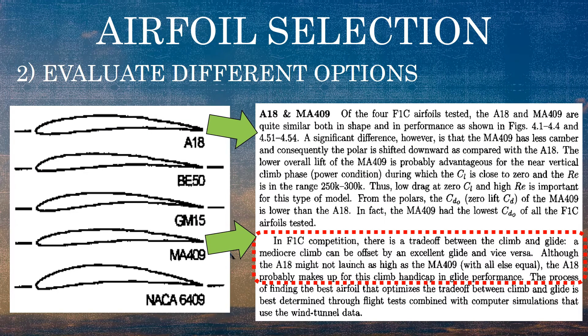We're first going to take a look at the A18 and MA409. There are a couple paragraphs from the book speaking about the two of them, and the part I really liked is this section circled in red. It says that although the A18 might not launch as high as the MA409 with all else being equal, the A18 probably makes up for this climb handicap in glide performance. Since we're doing a hand-launch glider where the climb is short and the glide takes up most of the flight time, I would choose the A18 over the MA409.